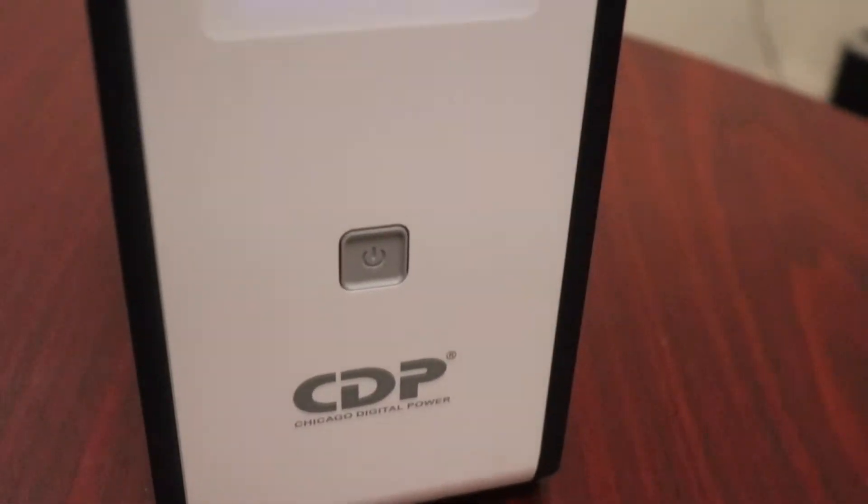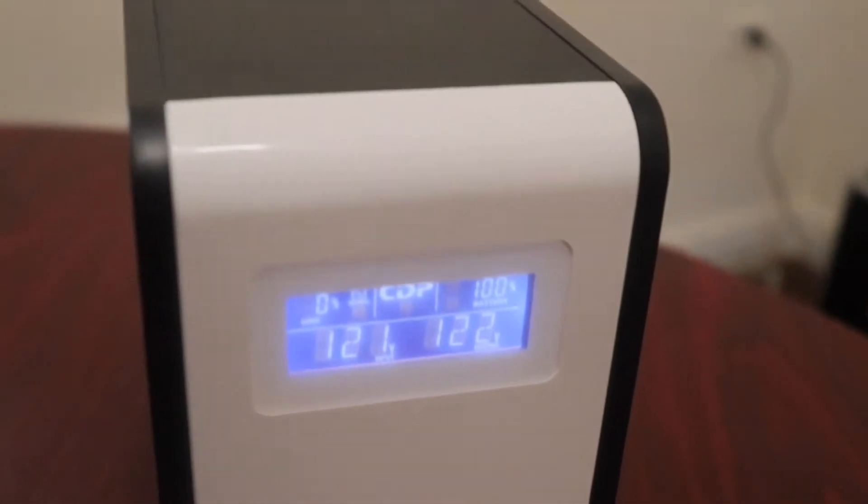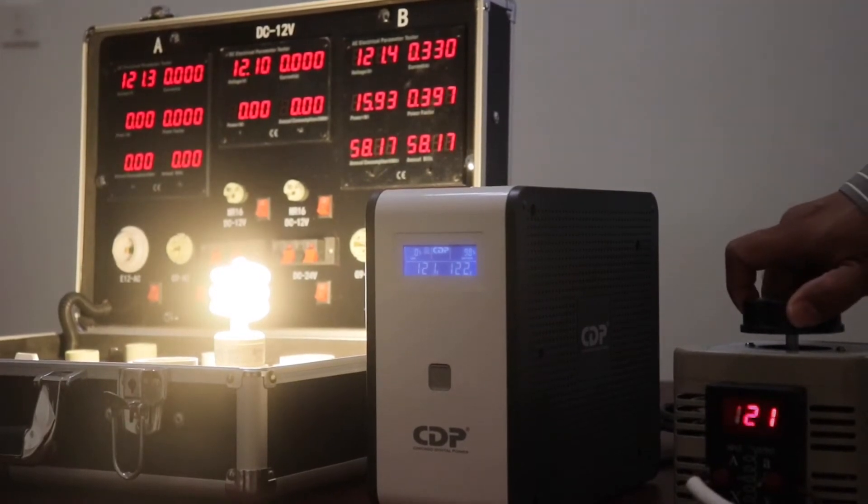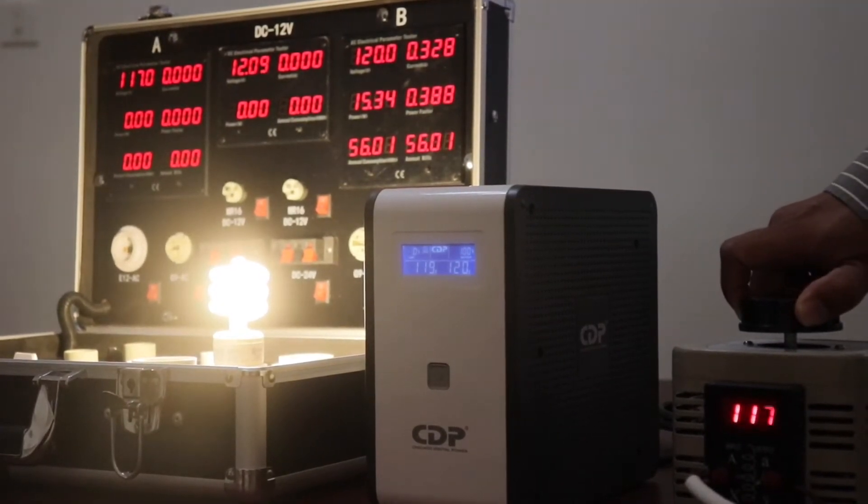Line Interactive UPS works in direct conjunction with the electricity supply. A good UPS unit will have an internal voltage regulator to control the voltage that's being supplied to your devices.